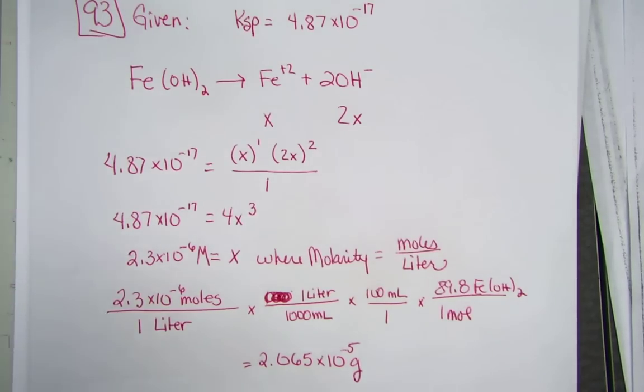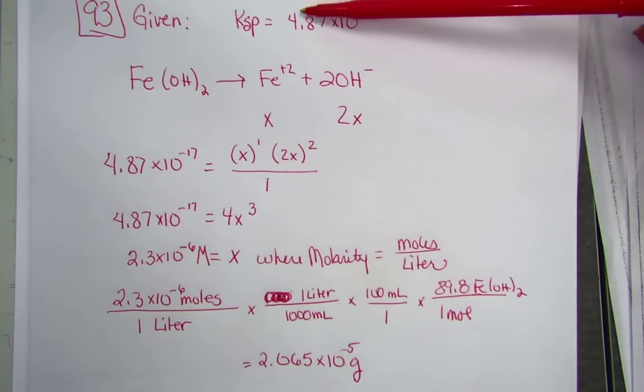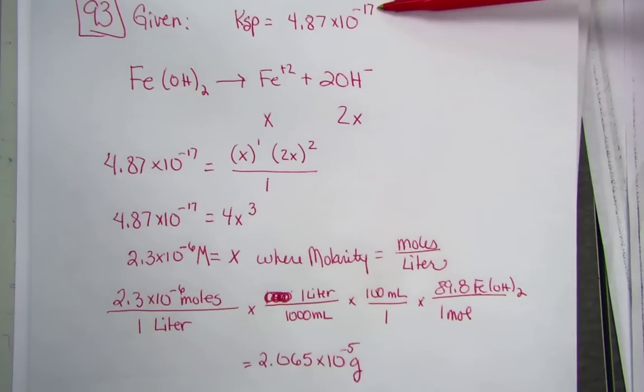Here's a look at homework problem number 93. It's a KSP problem. What's given is the KSP for iron(II) hydroxide, 4.87 times 10 to the negative 17th, a very slightly soluble salt.